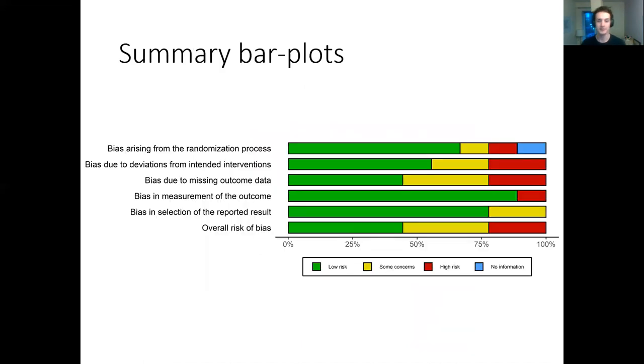An alternative way to present this information is as a summary bar plot where rather than showing the risk of bias in each domain for each study, you summarize across the domains to show the number of studies at each level of bias. For example, for the bias arising from the randomization process, more than half of the studies are at low risk of bias.